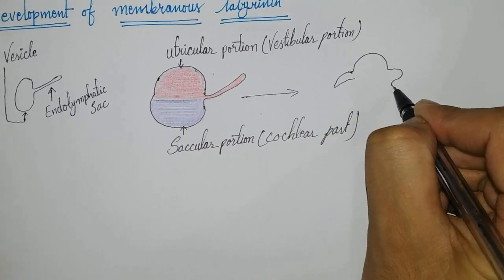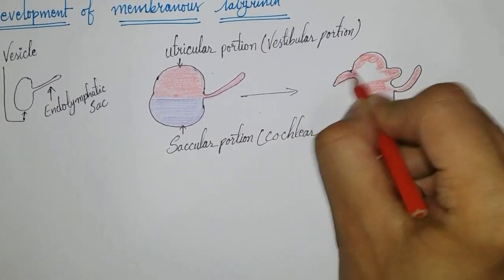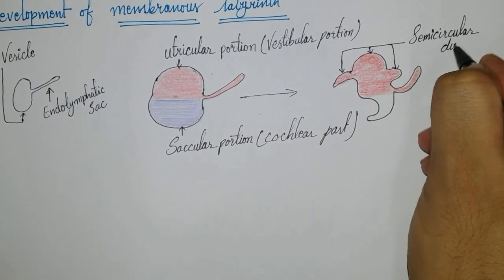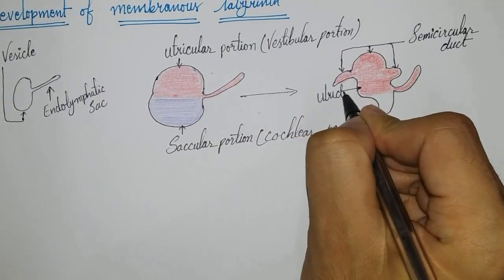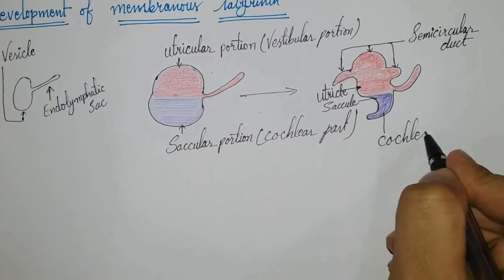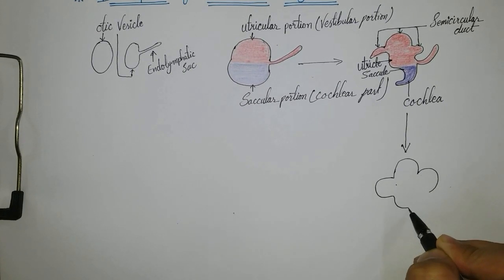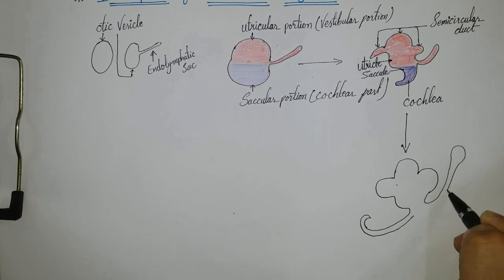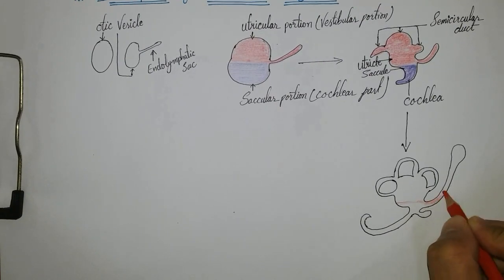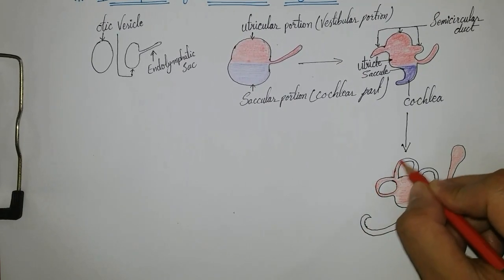There are two portions: the utricular portion, which is the vestibular part, and the saccular portion, which is the cochlear part. The saccular portion of the otic vesicle gives rise to the saccule, the cochlear duct (also called the organ of Corti), and the spiral ganglion of the vestibulocochlear nerve.